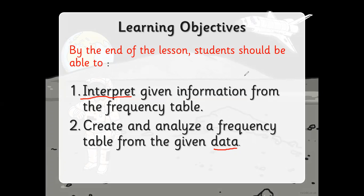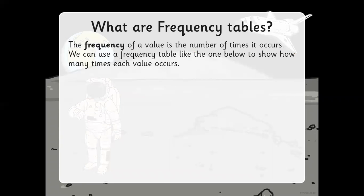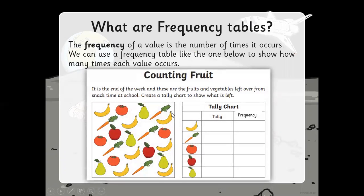Today we are going to talk about frequency tables. The frequency of a value is the number of times it occurs. We can use a frequency table like the one shown to display how many times each value occurs. The frequency column is basically a total — how many times that number or item appears.